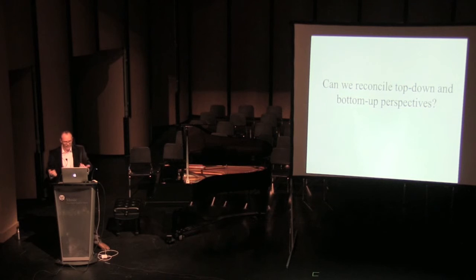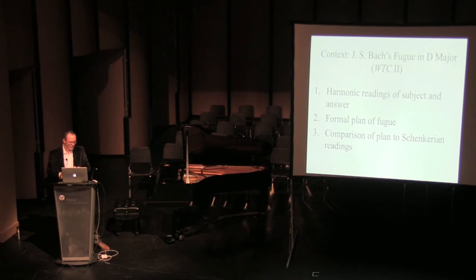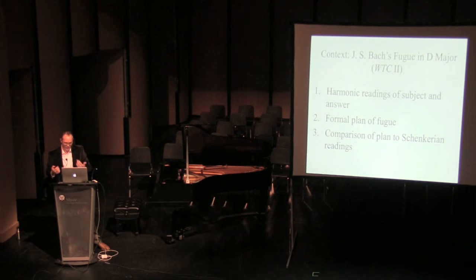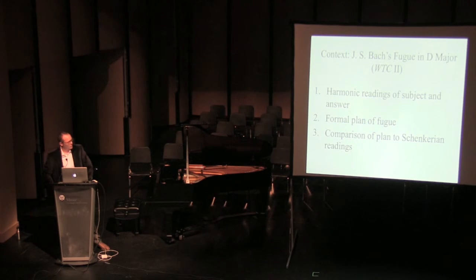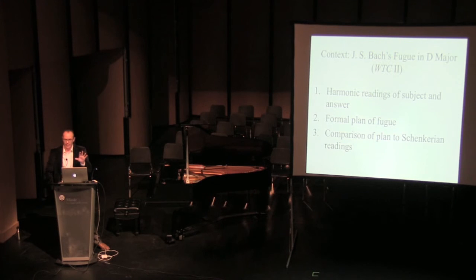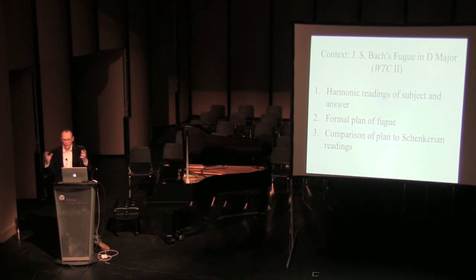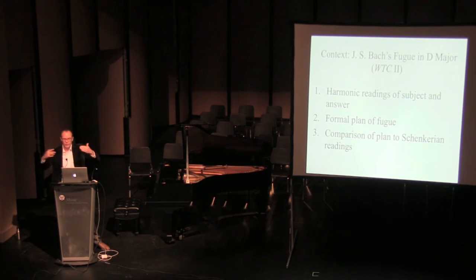So can we reconcile top-down and bottom-up perspectives when analyzing fugue? To address this question, we're going to look at J.S. Bach's Fugue in D major from the Well-Tempered Clavier, Book 2. We'll first look at harmonic readings of the fugue's subject and the answer — what comes right after the subject statement. Based on those harmonic readings, we'll create a formal plan of the fugue, and then compare that to more top-down Schenkerian readings to see how they square.